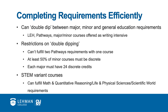First, a single course cannot fulfill two Pathways requirements. In addition, at least 50% of the courses taken to fulfill the requirements of a minor must be discrete. That means that at least 50% must be different from the courses used to fulfill the requirements of your major or other minors or certificates. Finally, for students declaring multiple majors, each major must have 24 discrete credits.